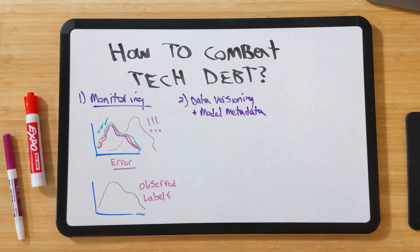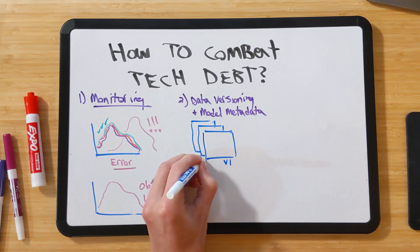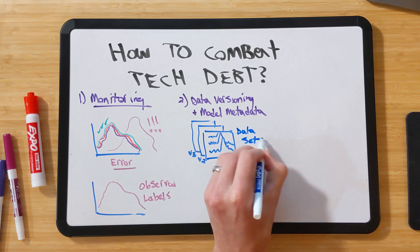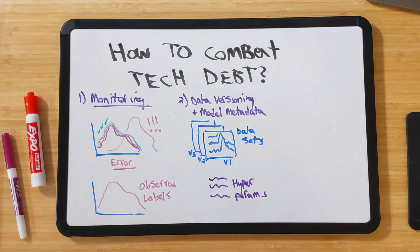Another technique is to start tracking specific versions of our data, as well as metadata associated to the model, such as the hyperparameters used for training. Doing this can greatly improve reproducibility of the model training process and make it faster to track down issues should they occur.